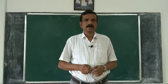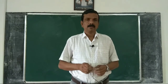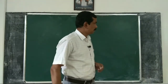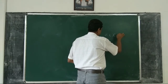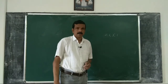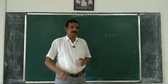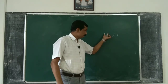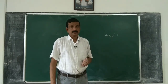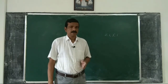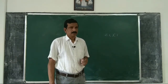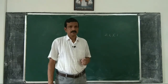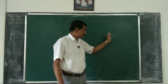Dear students, so far we have introduced the test statistics Z, T, Chi-square, and F. As we have discussed in the previous classes, Z test statistics can be used if and only if population variance is known. If population variance is unknown, we use the sample variance, then the test statistics is T.